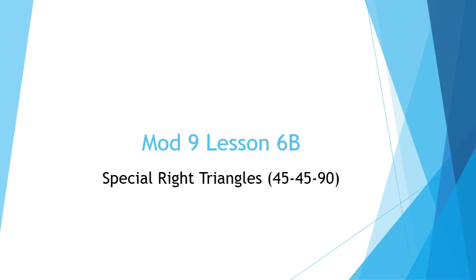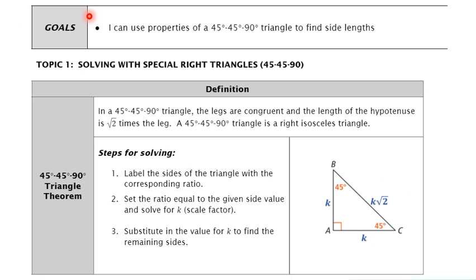This is the lesson for Mod 9, Lesson 6B: Special Right Triangles — 45-45-90 triangles. The goal is going to be solving for sides of right triangles. In the previous video we saw solving with the Pythagorean theorem, where you have two sides of a right triangle. With 45-45-90 triangles, we can use this when it's something we can't easily do with the Pythagorean theorem, but we know the angles are 45-45-90 and they follow a certain relationship.